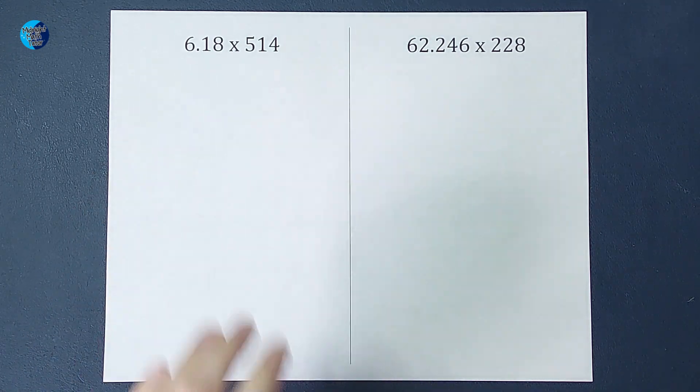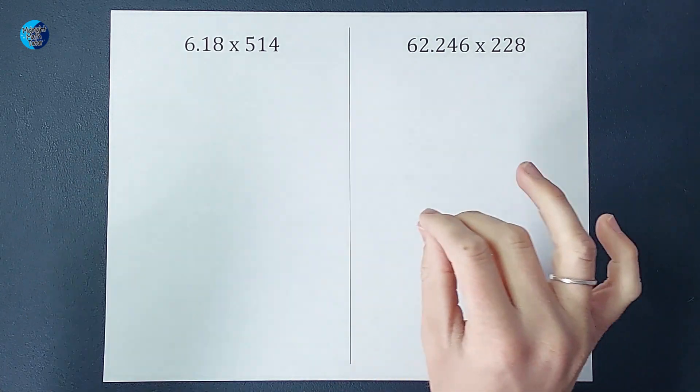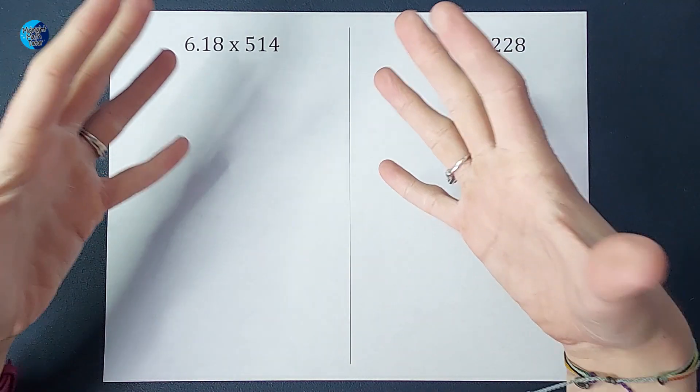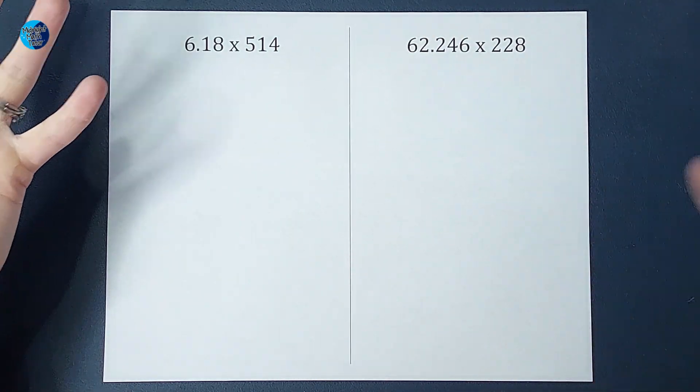When we multiply these, we do not have to line up the decimals. If you have been adding and subtracting decimals, you know we have to line up the decimals. But when we multiply, we don't have to.